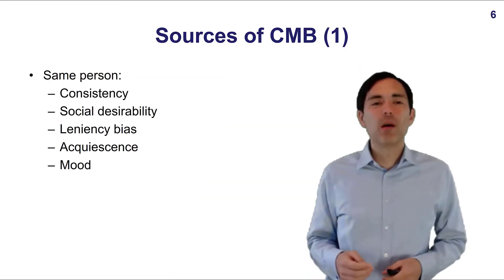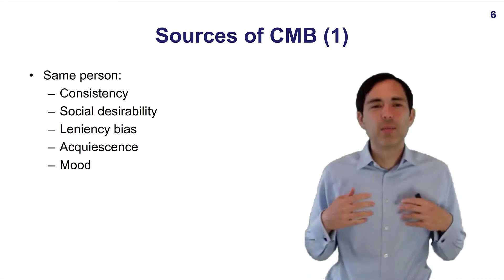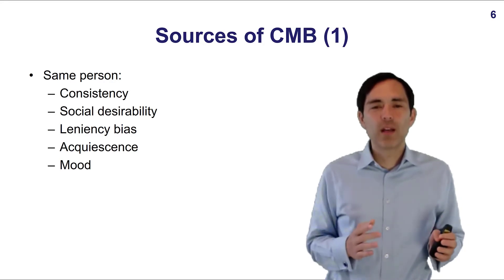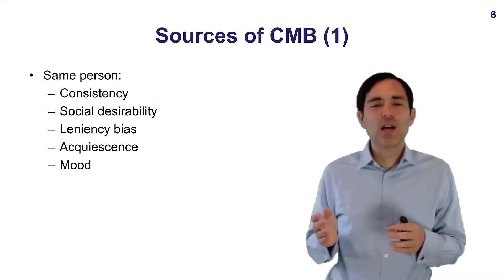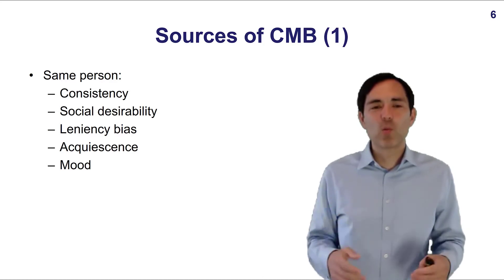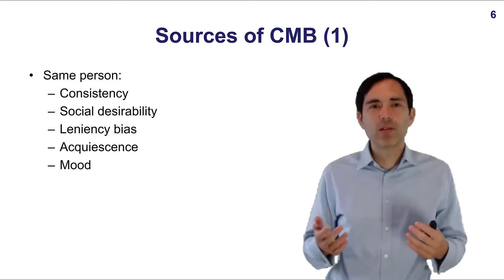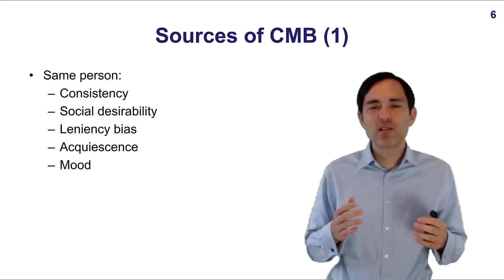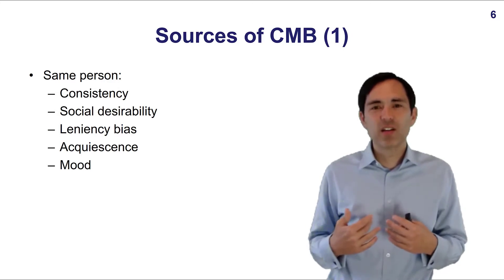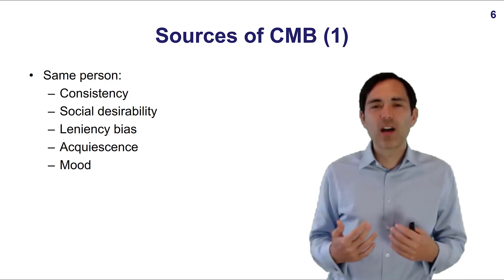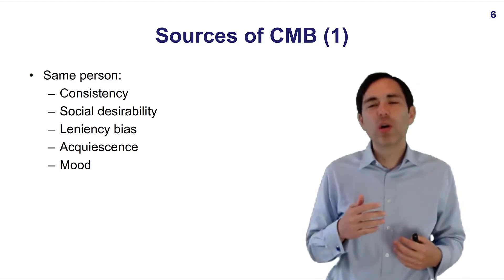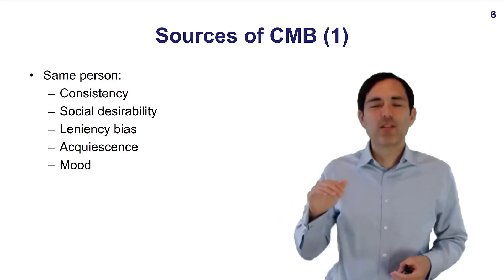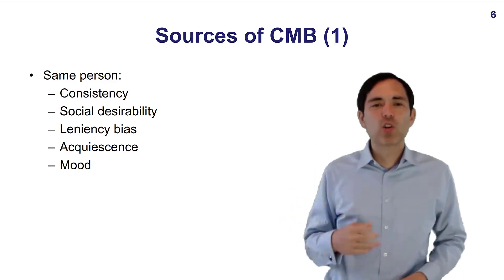There are different sources of Common Method Bias. The main problem is if both the independent variable and the dependent variable are measured by the same person in one survey. It's very possible that there's a high consistency of answers — I think I'm highly motivated, I think I perform very highly. Or in the survey, some people always take the same number, always seven, seven, seven — consistency.